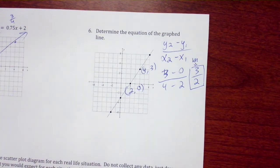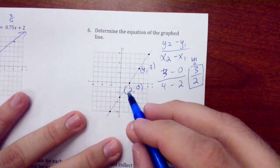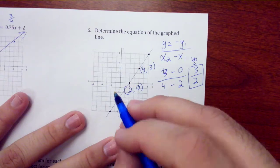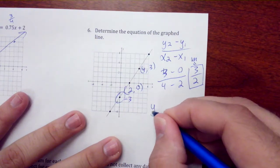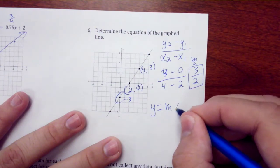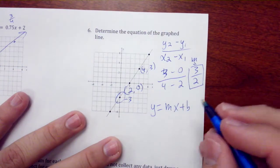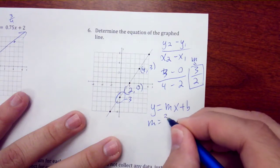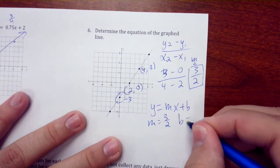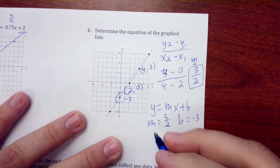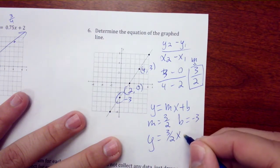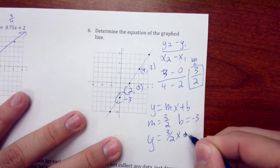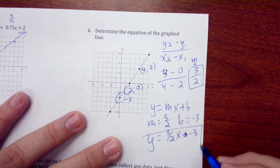I have the points, I know what my y-intercept is, it's down here at -3. Now I can go y = mx + b. I know my m = 3/2, that's my slope. My b = -3, so y = (3/2)x - 3, and that is our answer. Let me know if you have any questions on any of these.